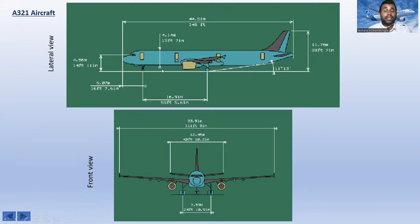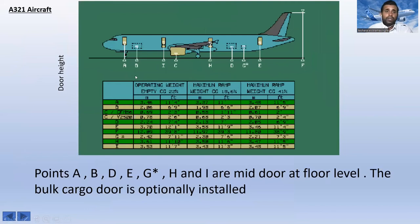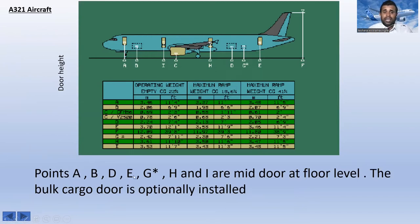The A321 is longer than both the A320 and A319. From nose to tail it is around 44.51 meters, and the wingspan is around 33.91 meters. In the lateral and front views, the door heights are listed in a table. The dotted lines indicate cargo doors, which are located on the right side of the fuselage. Door positions A, B, D, E, G-star, H, and I are mid-doors at floor level. The bulk cargo door is optionally installed.